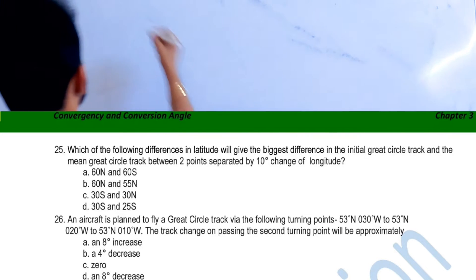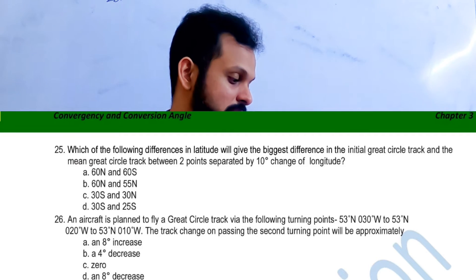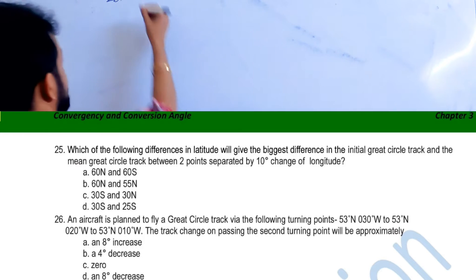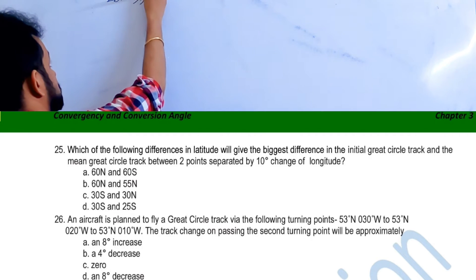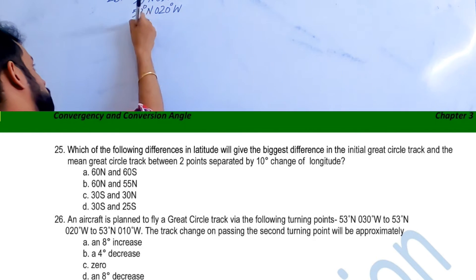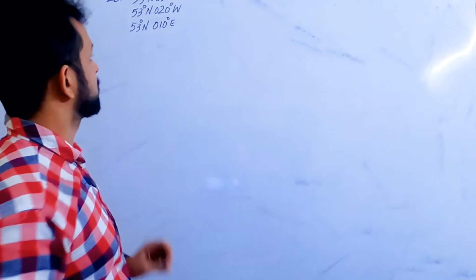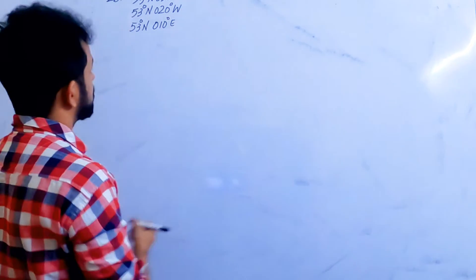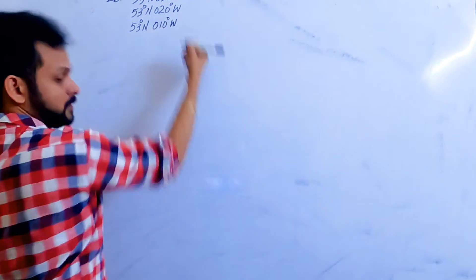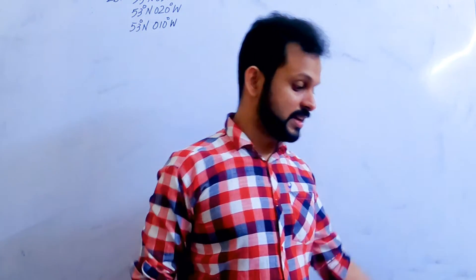Let's read your question again, question number 26. The aircraft is planned to fly a great circle track via the following turning points: 53 degrees north, 30 degrees west; 53 north, 20 west; 53 north, 10 degrees west. The track change on passing the second turning point will be.